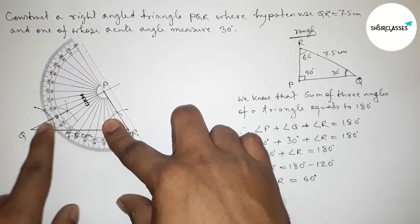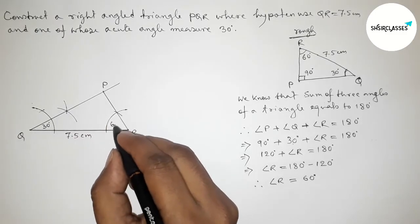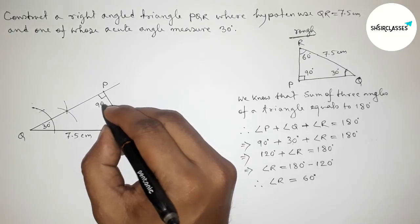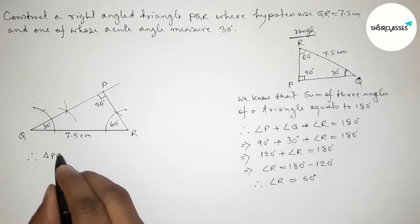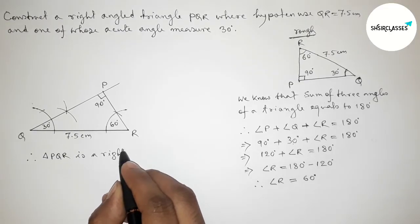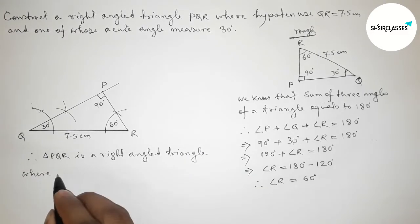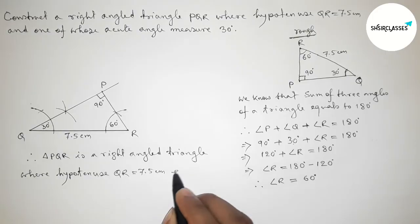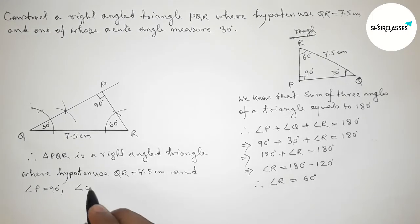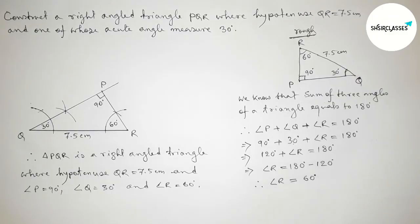So angle P equals 90 degrees, angle Q equals 30 degrees, and angle R equals 60 degrees. Therefore, triangle PQR is a right angled triangle where the hypotenuse QR equals 7.5 centimeters and all angles are confirmed. By this way you can construct right angle triangle PQR easily. Thanks for watching — if this video is helpful, please share it with your friends.